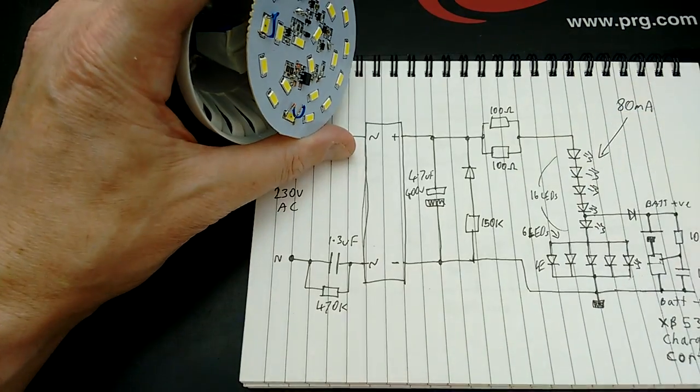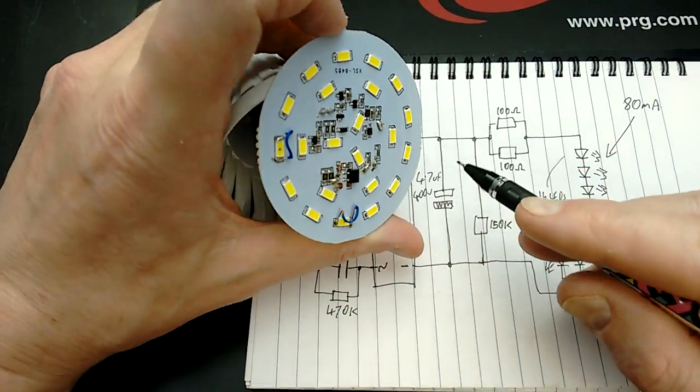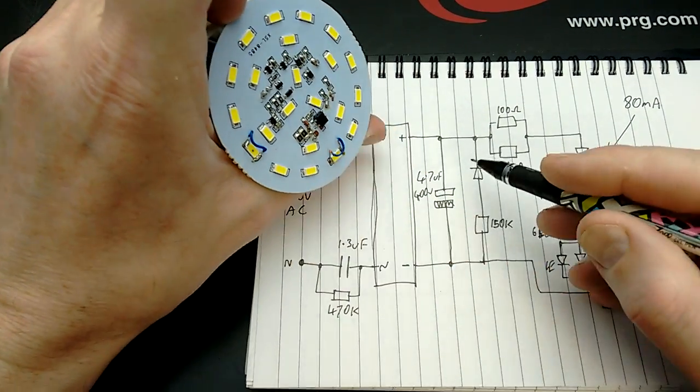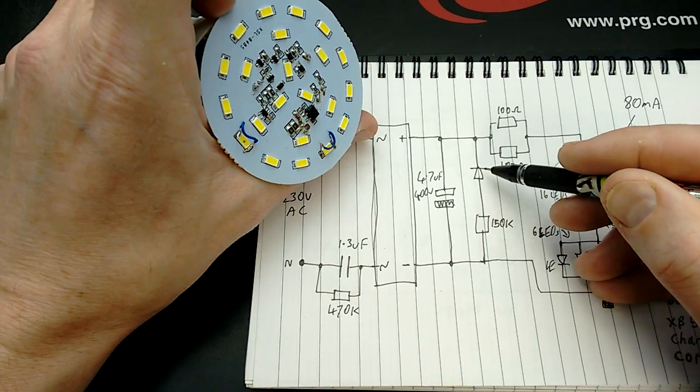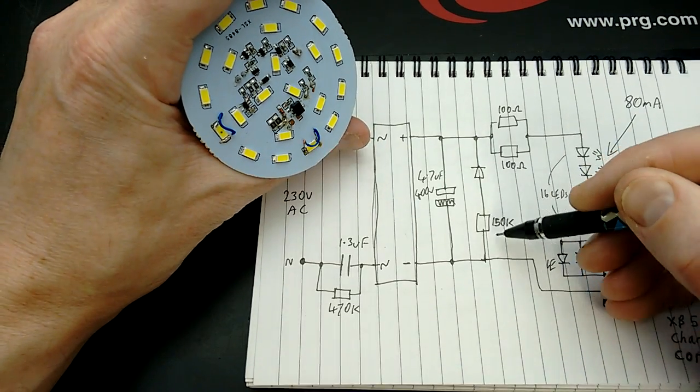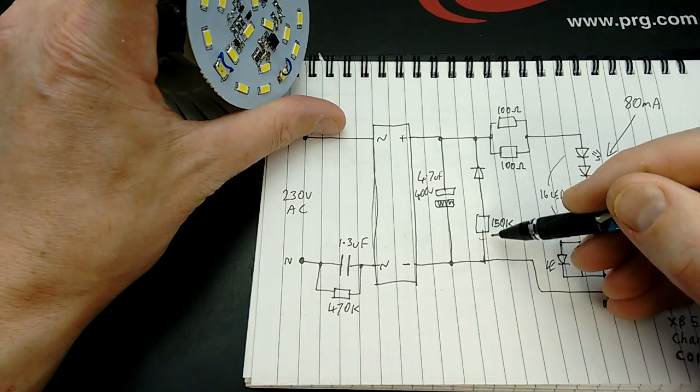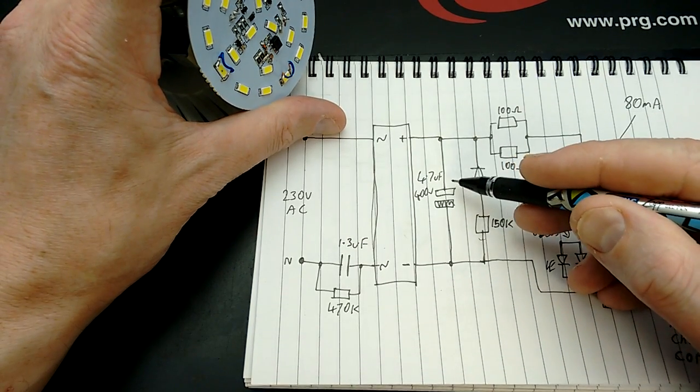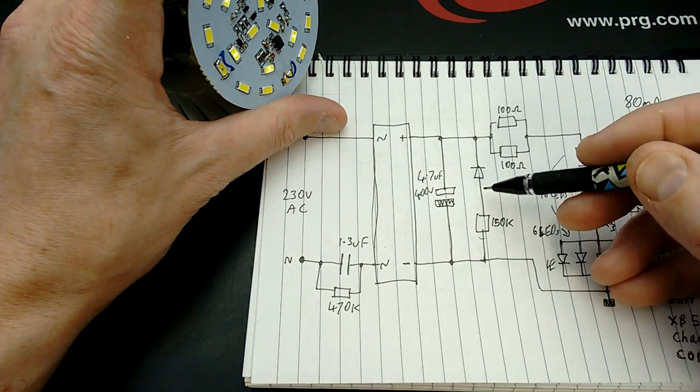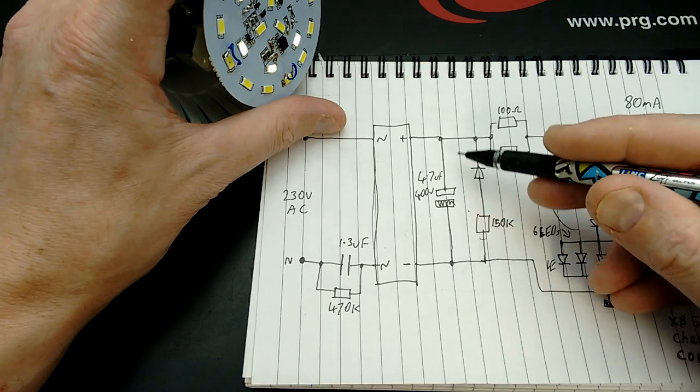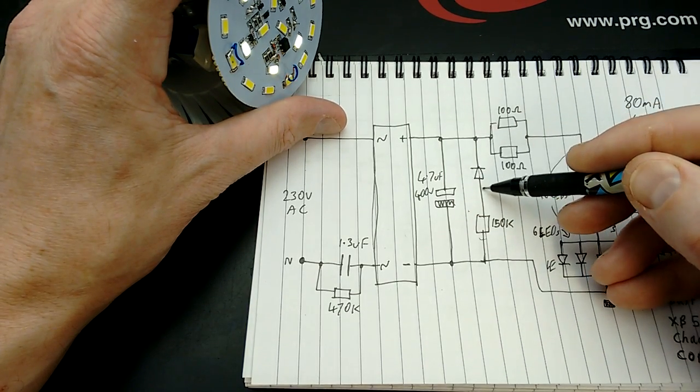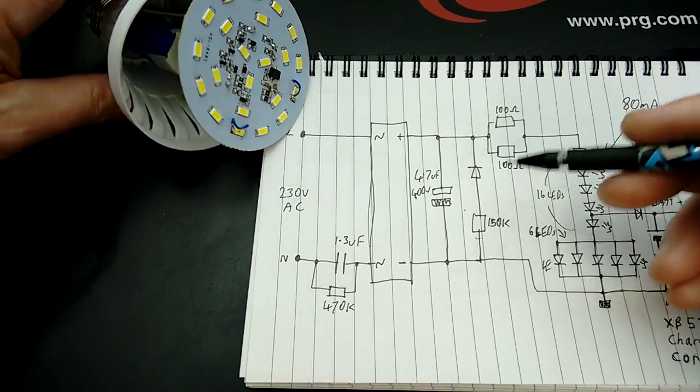Across that, now I'm not sure if this is a standard diode, this little red diode, if it's a standard diode or a zener. But it's in series with a 150k resistor, and I'm not 100% sure of this arrangement. It looks like it's designed to discharge the capacitor, but it can't be, because the diode's pointing the wrong direction. It's odd, I'm not 100% sure about that.